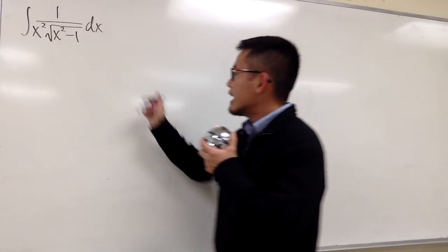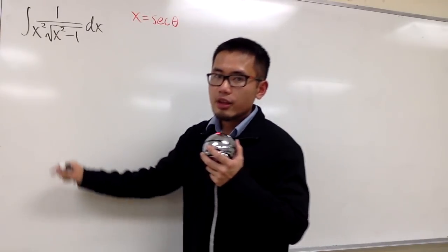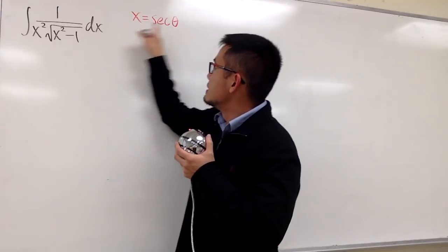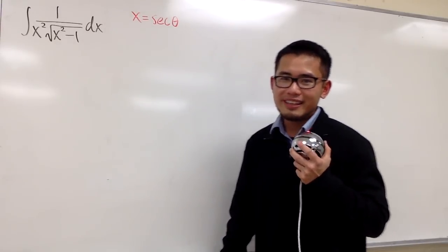And the choice is that I'm going to let x equal to secant theta. Because I know if I have x being secant theta, secant squared theta minus 1 is going to give us tangent squared theta.